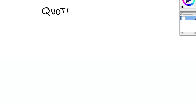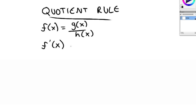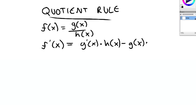Now the quotient rule. If the function of x is equal to some function g of x divided by another function h of x, then the derivative of the function of x is equal to g prime of x multiplied by h of x minus g of x multiplied by h prime of x, all over h of x squared.